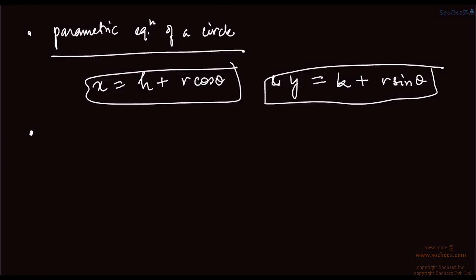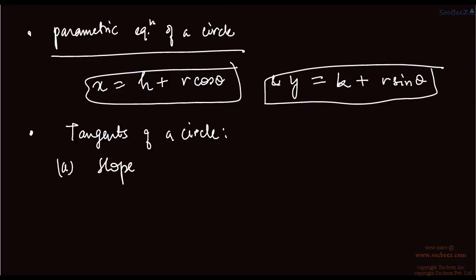The next point is about tangents of a circle. The first form is slope form. Slope form is y equals to mx plus or minus a times root of 1 plus m squared.